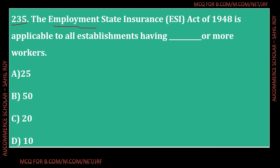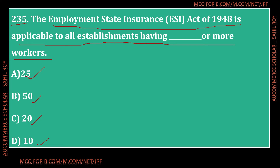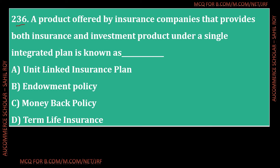Question number 235: The Employment State Insurance Act 1948 is applicable to all establishments having dash or more workers. The question asks what is the minimum number of workers required in an establishment for ESI Act 1948 to be applicable. Options: 25, 50, 20, or 10 workers. The correct answer is Option D - 10 workers. A minimum of 10 workers is required before ESI Act becomes applicable to an establishment.